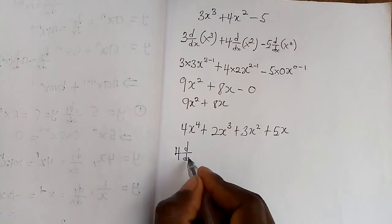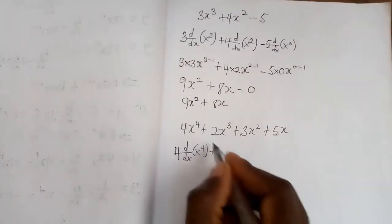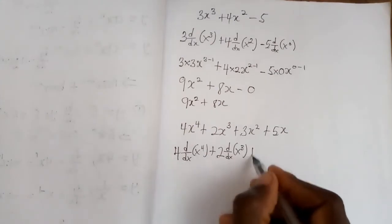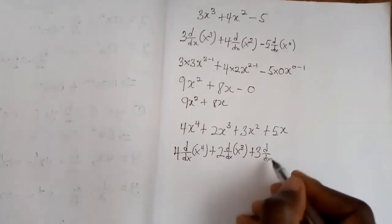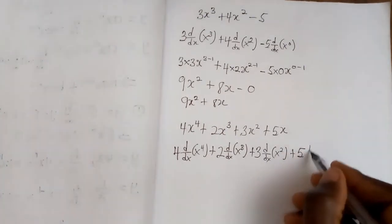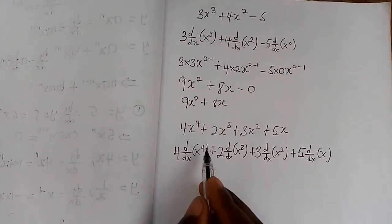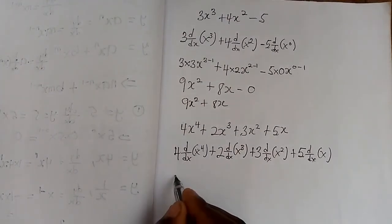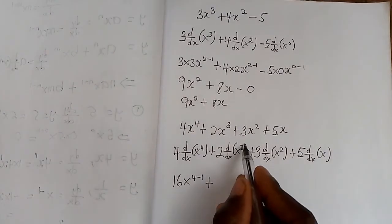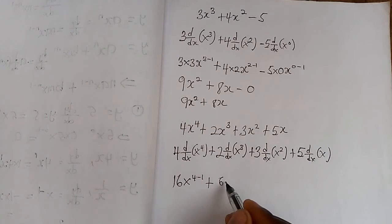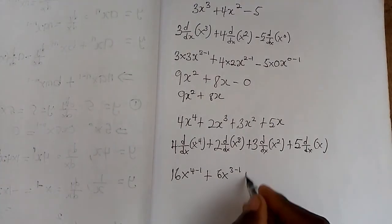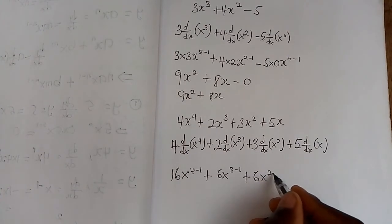For 4x⁴: the 4 exponent falls back and multiplies 4, giving 4 times 4 = 16, and x^(4-1) = x³. For 2x³: the 3 falls back and multiplies 2, giving 3 times 2 = 6, and x^(3-1) = x². For 3x²: the 2 falls back and multiplies 3, giving 2 times 3 = 6, and x^(2-1) = x.